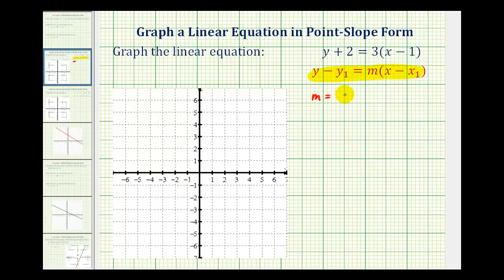M is the slope of the line, and the line contains the point x sub one, comma, y sub one.